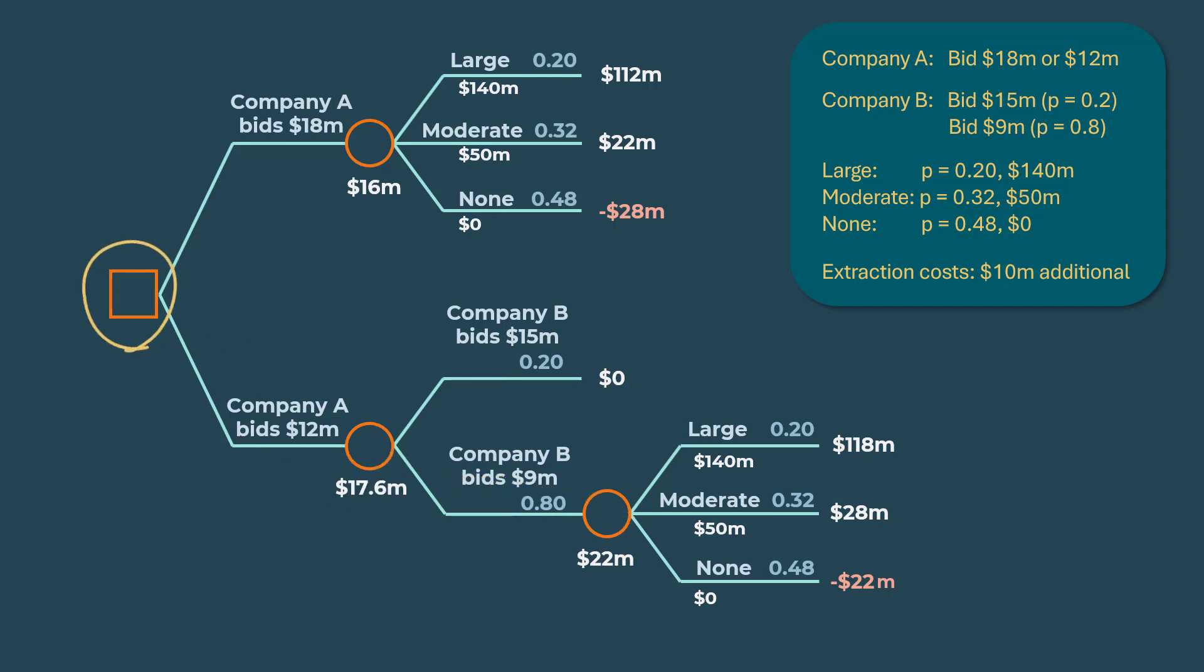Finally, at this decision node, we choose between bidding $18 million and $12 million. Since the expected value of $17.6 is higher than $16 million, the optimal decision is to bid $12 million. And the expected value of the decision is $17.6 million.